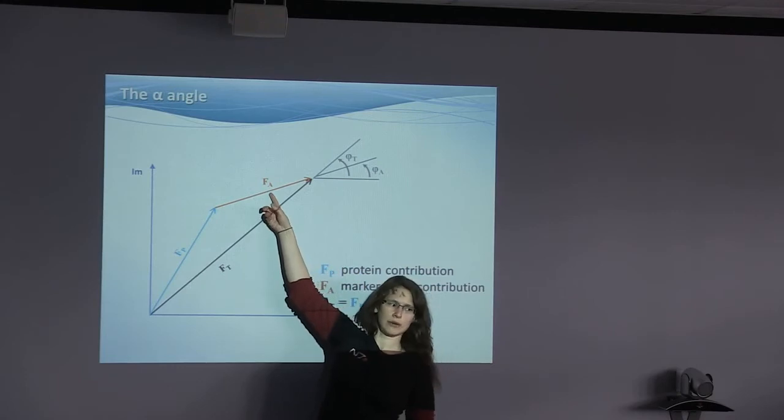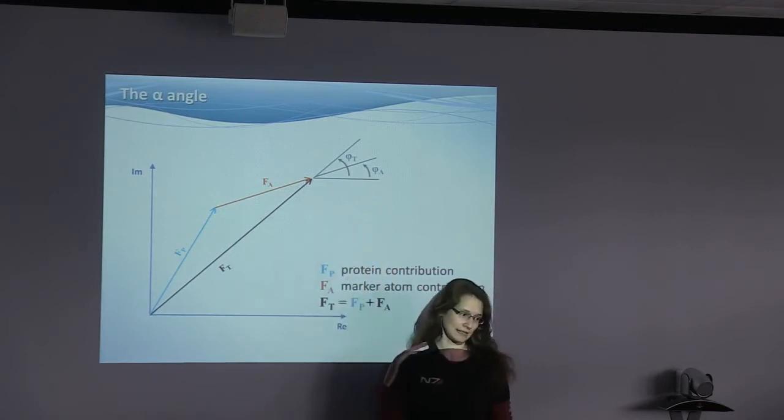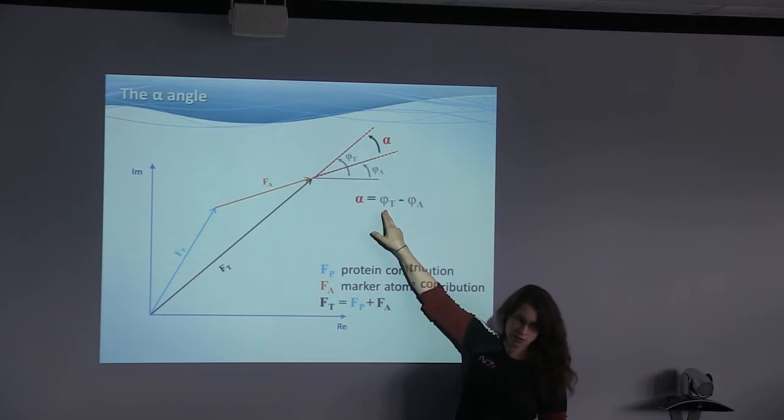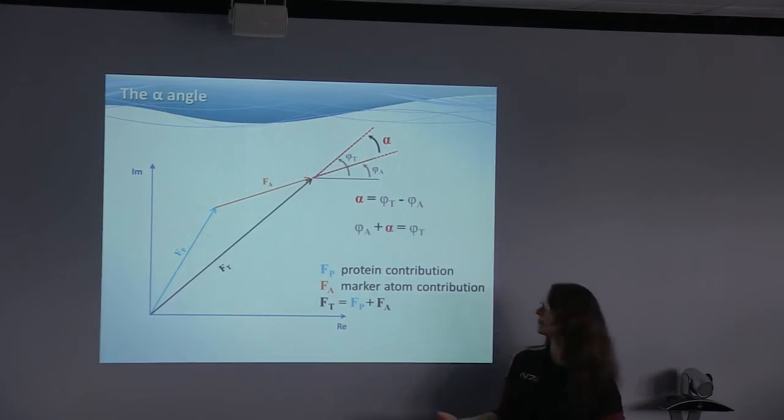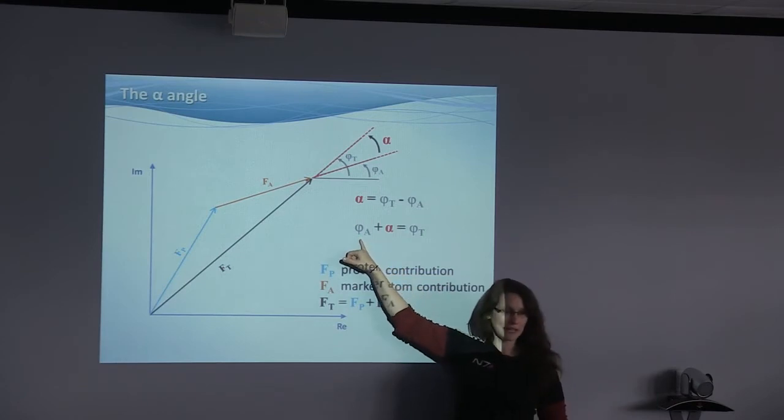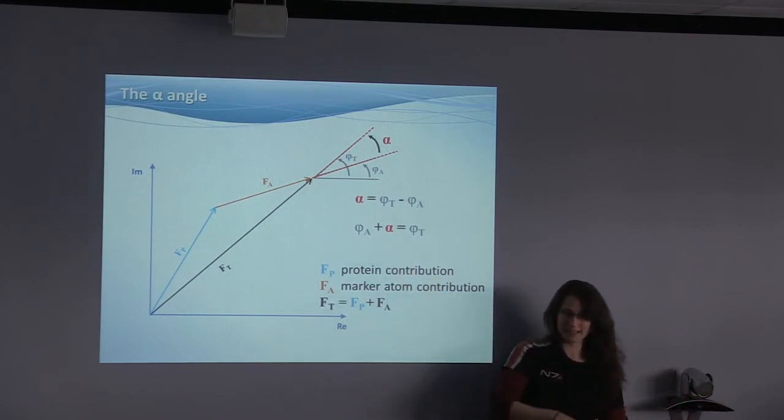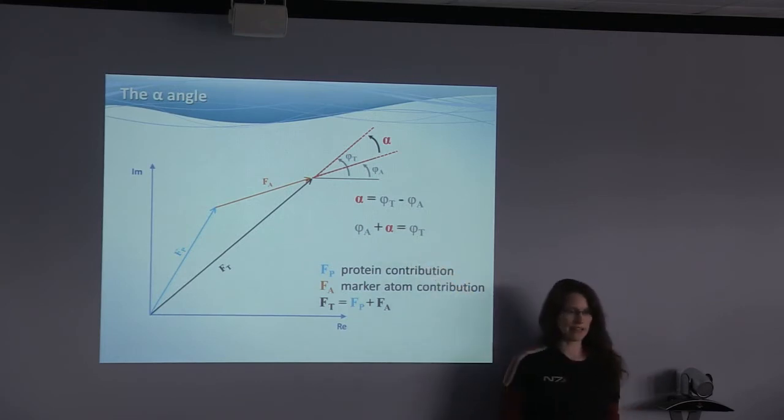The alpha angle: you have the total structure factor called FT and you can split it up in two contributions, one from your marker atoms and one from everything else. The one from the marker atoms is called FA, F anomalous scatterers. The other one is called FP, F protein. These two have phase angles. If we take the difference of those, that's the alpha angle. It is the phase of the structure factor minus the phase of only the anomalous scatterers.